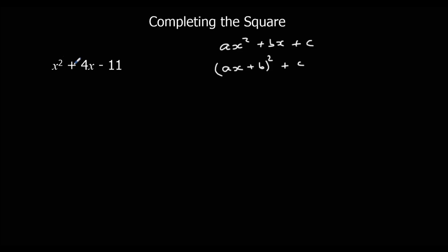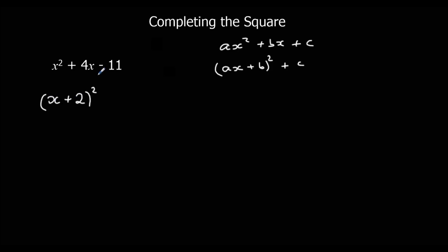So here we've got x squared plus 4x minus 11. What we're going to do is we're going to half this middle number. So this b term — the original b term — it's 4. So we're going to half it, and we're going to have x plus half of 4, which is 2. We're going to put that in a bracket, so we're going to have x plus 2 squared. We just half the middle number.